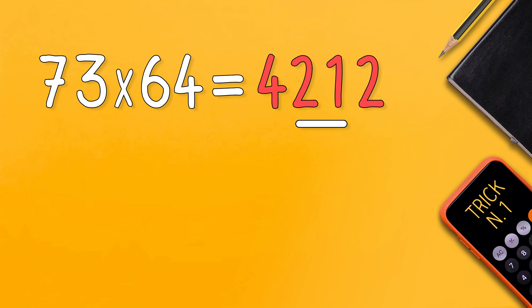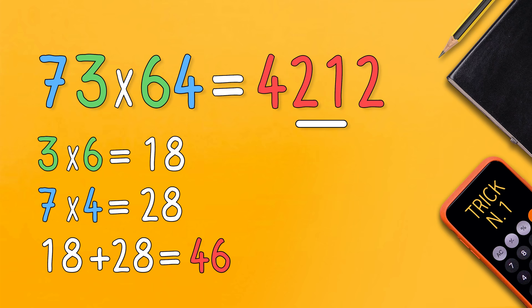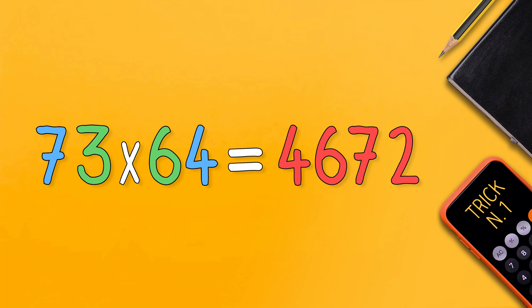We calculate the middle number as usual, 6 by 3 is 18, 7 by 4 is 28 and we get 46. In this case there is no blank space but we need to add the middle number to the second last number of the result. So you need to add the 6 to the 1 and then the 4 to the 2 and the final result is 4,672.